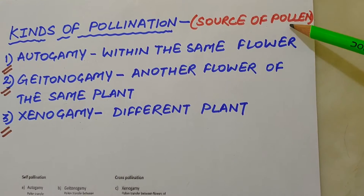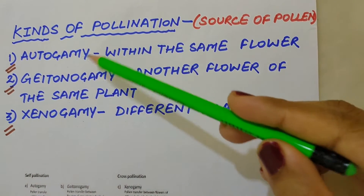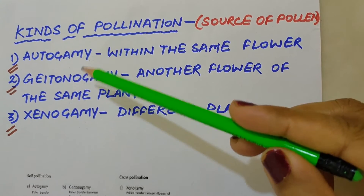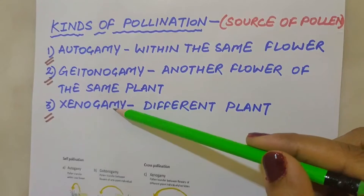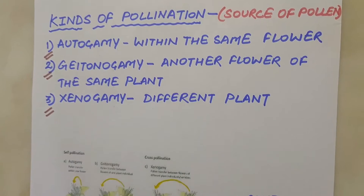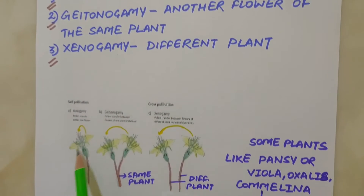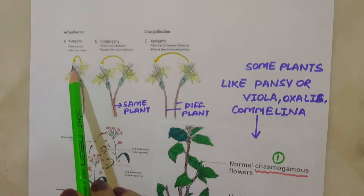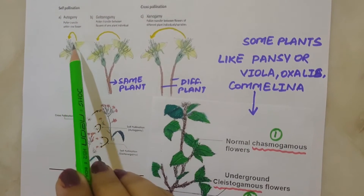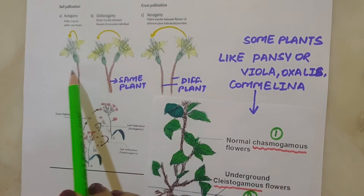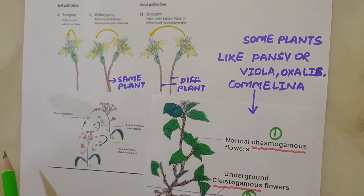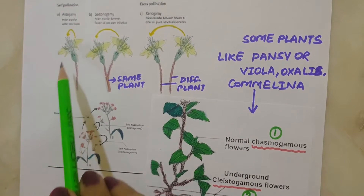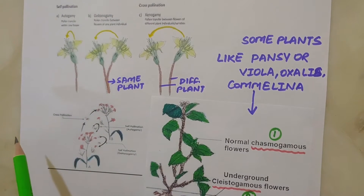Depending on the source of pollen, pollination is of three types: autogamy, geitonogamy and xenogamy. In autogamy, pollination is achieved within the same flower. Transfer of pollen grain from the anther to the stigma of the same flower is autogamy. In a normal flower which opens and exposes the anther and stigma, complete autogamy is rather rare.